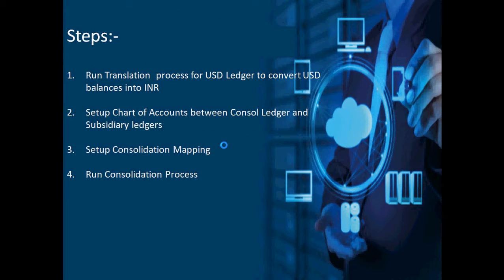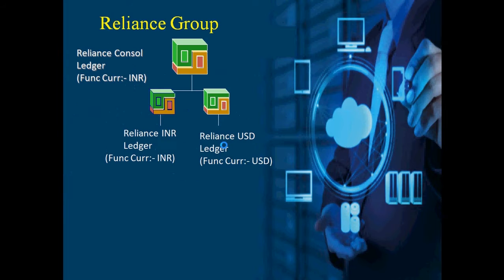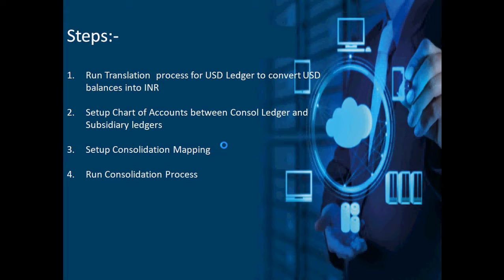The first step is to run the translation process for the USD ledger to convert USD balances into INR. Just as we can add apples to apples or oranges to oranges, in order to consolidate the numbers of Reliance USD ledger into Reliance Consolidated Ledger we need to convert USD into INR. We run a process called translation in the USD ledger which will convert the balances from USD to INR. For more detail on the translation process you can refer to my YouTube channel.